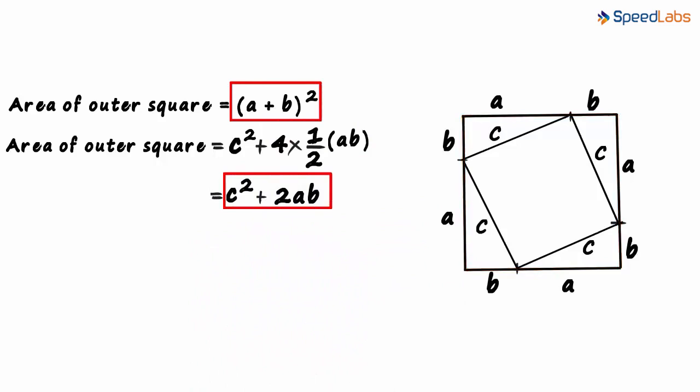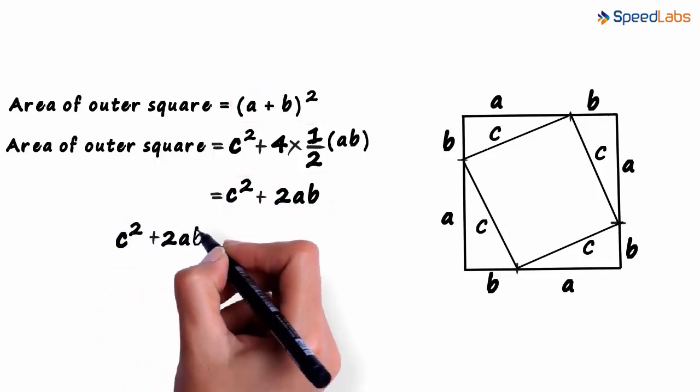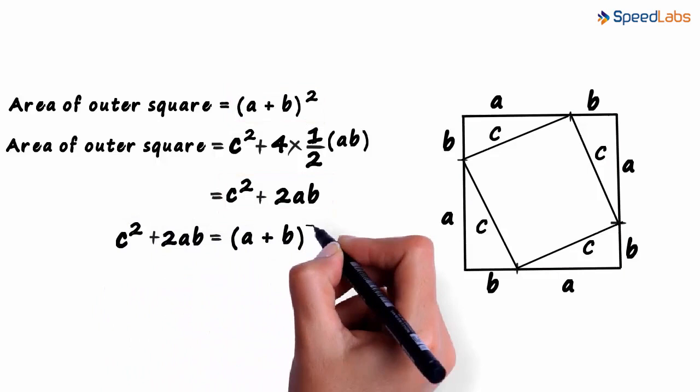Both these are the area of the outer square. Equating these two, we can write c² + 2ab = (a + b)².